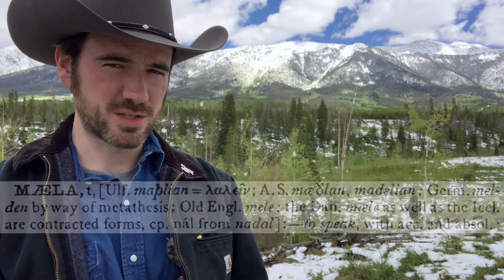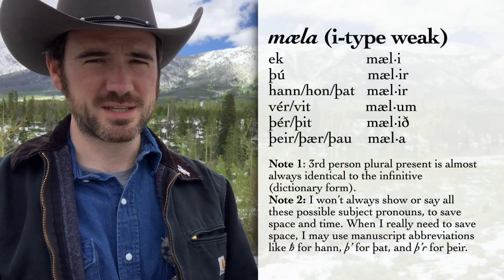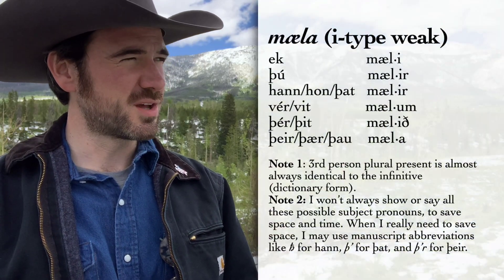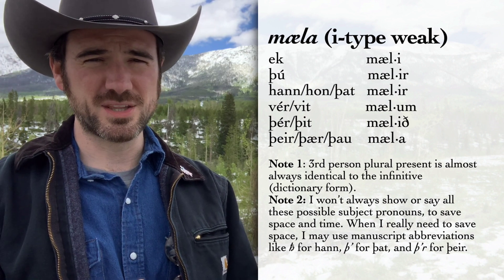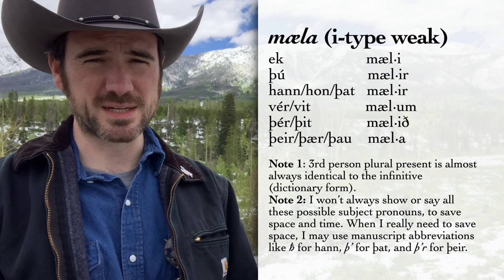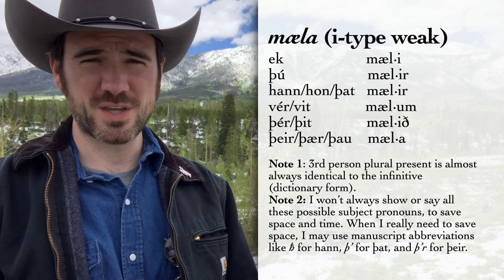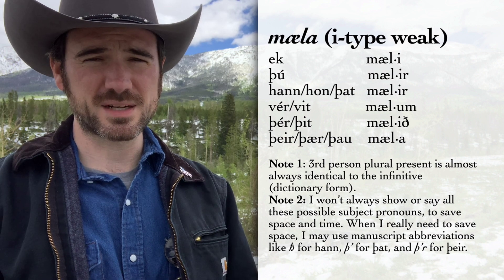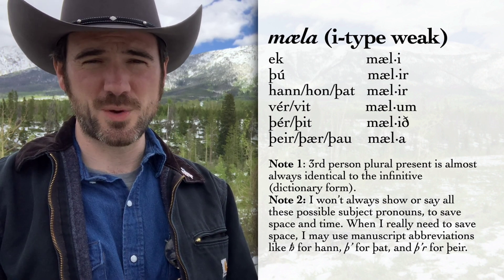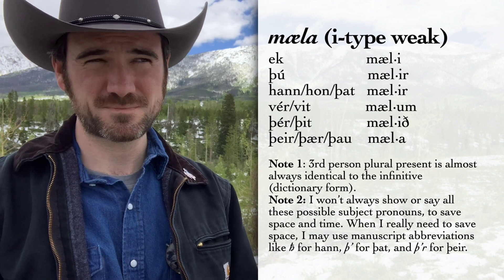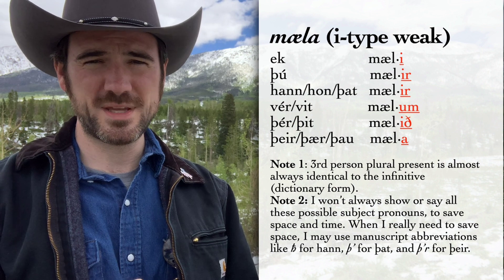So what does the present of mæla look like? I speak: ek mæli. You speak (singular): þú mælir. He/she/it speaks: hann/hon/þat mælir. We speak: vér mælum. Y'all speak: þér mælið. They speak: þeir/þær/þau mæla. So your endings are: -i, -ir, -ir, -um, -ið, -a.